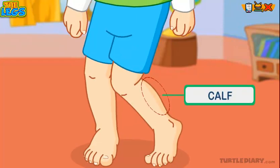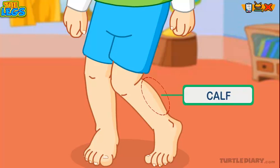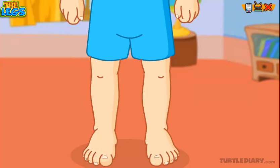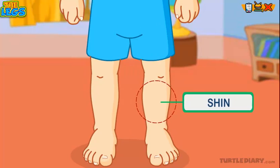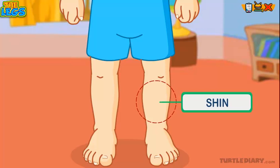This is my calf. The calf is the back portion of the lower leg. This is my shin. The shin is the front part of the leg below the knee and above the ankle.